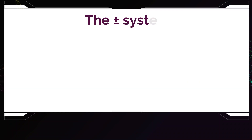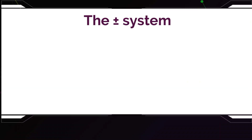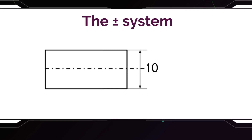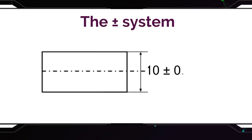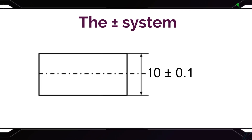The standard system of dimensioning was the plus-minus system, in which, for example, we have a dimension of 10mm, and then you give it a size limit, for example, plus-minus 0.1.